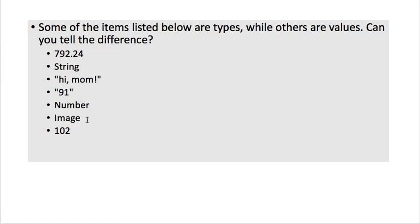The next one is the name of the data type image. And the last one is a number. So I just want you to tell the difference between the name of a data type, like string, number, and image, and an expression that actually is data.